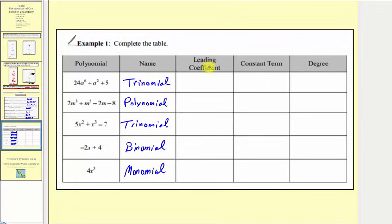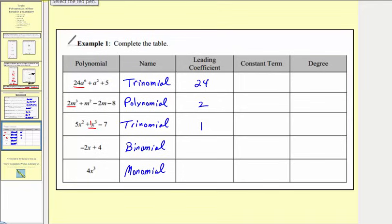Next, we find the leading coefficient, which is the coefficient of the leading term — the term with the highest exponent on the variable. The leading term is 24a to the sixth, so the leading coefficient is 24. In the next polynomial, the highest exponent on m is three, making that the leading term with a leading coefficient of two. We need to be careful on the next example because the terms are not in descending order. The highest exponent on x is three, so the leading term has a coefficient of one, giving a leading coefficient of one. For the binomial, the leading term is negative two x, so the leading coefficient is negative two. For the monomial, this is the only term, so the leading coefficient is four.